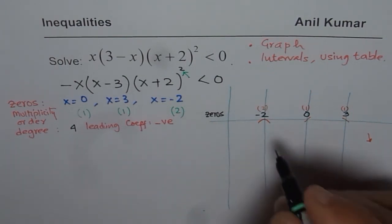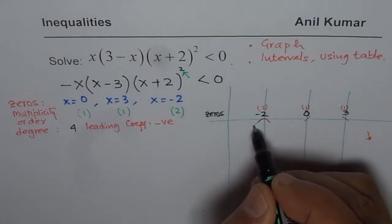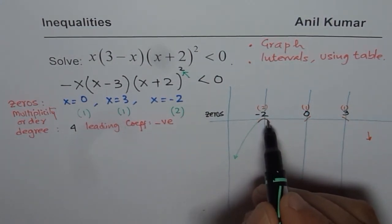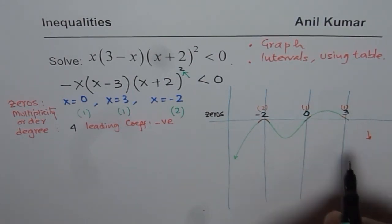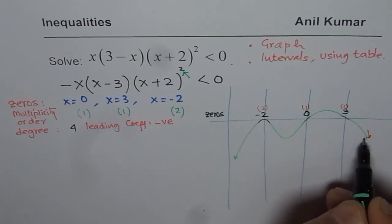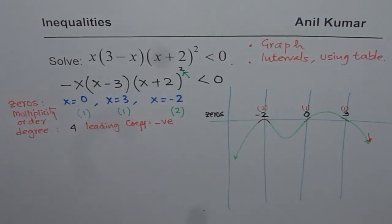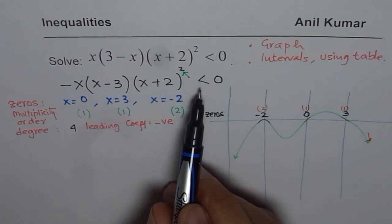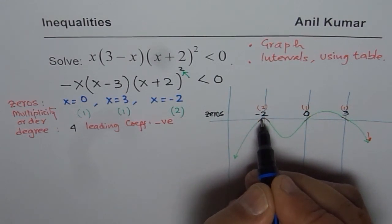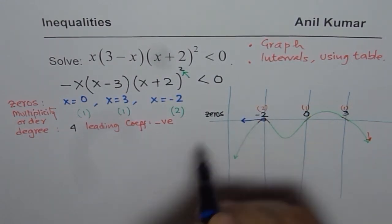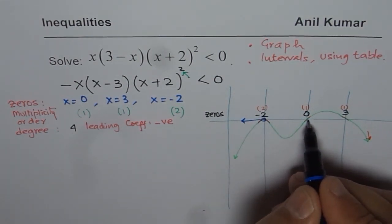The polynomial goes downward. Using the sketch, we can connect the behavior and identify where the function is negative. We are looking for portions which are less than 0, meaning negative, and zeros are not included. So the solution includes the region from minus infinity to minus 2, and also from minus 2 to 0.